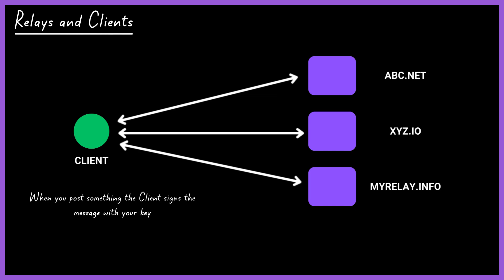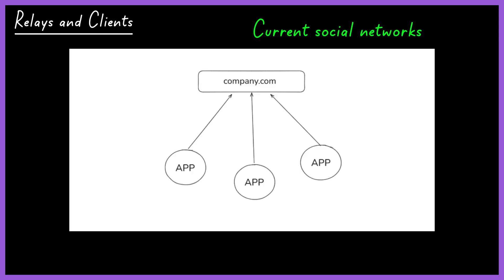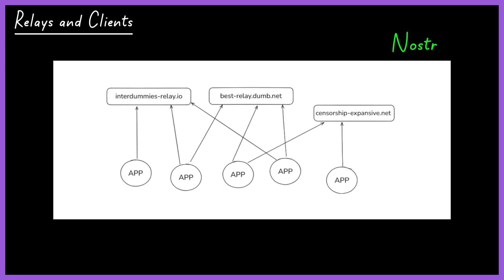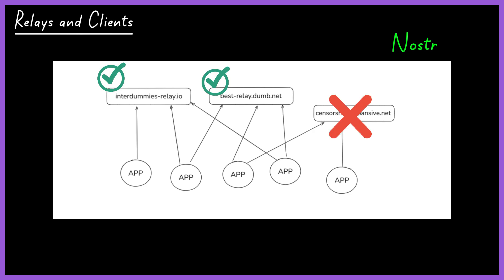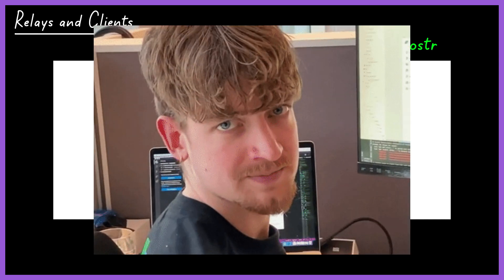When you post something, the client signs the message with your key and transmits it to the relays. To read messages from other people, the client requests updates from different relays. This contrasts with how a social network currently works, where all data is centralized under the control of a single entity. In Nostr, however, clients connect to various relays. As a user, you have the freedom to choose which relays you want to connect to. If one relay stops functioning, your posts will still be saved on other relays. Moreover, if you're not fond of the community's free relays, nothing stops you from setting up your own private relay.